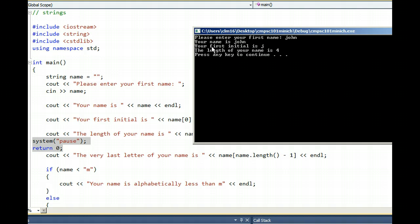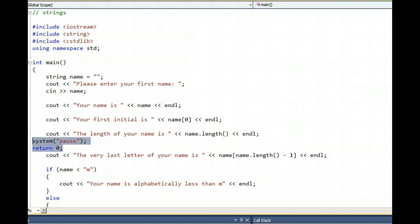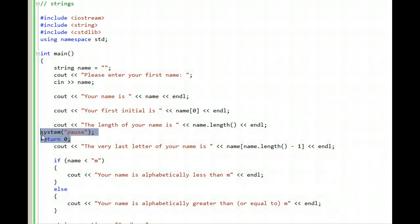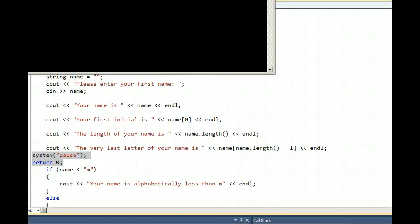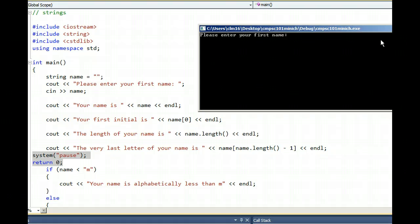But this version of the output displays the length of my name as four. And continuing with this theme, I run the program again here with the system pause return zero at that point. Typing in John leads to the output that the very last letter of my name is N.